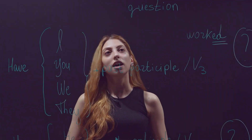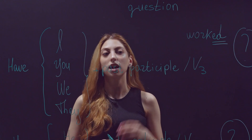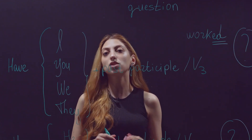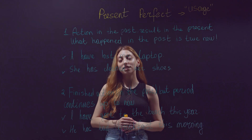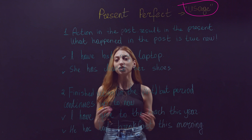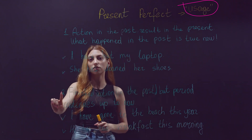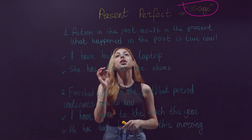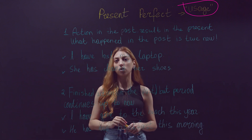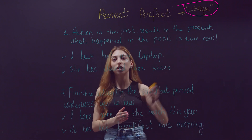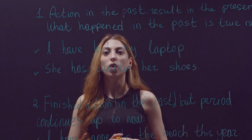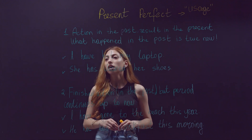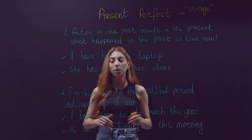Now let's move on to the usage of present perfect — in which situations it is necessary to use it. We have two main cases. The first one is: action in the past, result in the present. In other words, what happened in the past is still true now. We use present perfect tense when your action is finished and you can clearly see the result right now. Let's look at the examples.